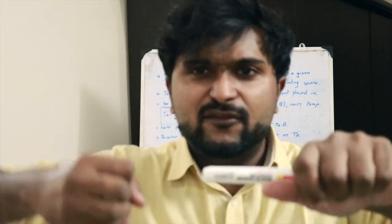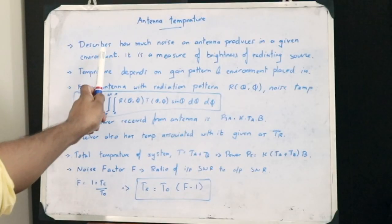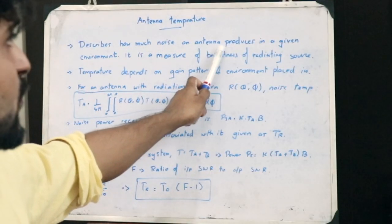In the case of an antenna, if there are a lot of noise elements disturbing that particular radiation, then the brightness of that radiation will not be that great. The antenna temperature describes how much noise an antenna produces in a given environment.